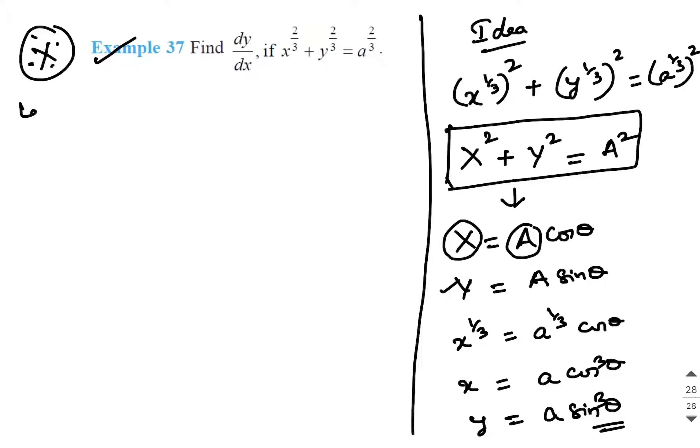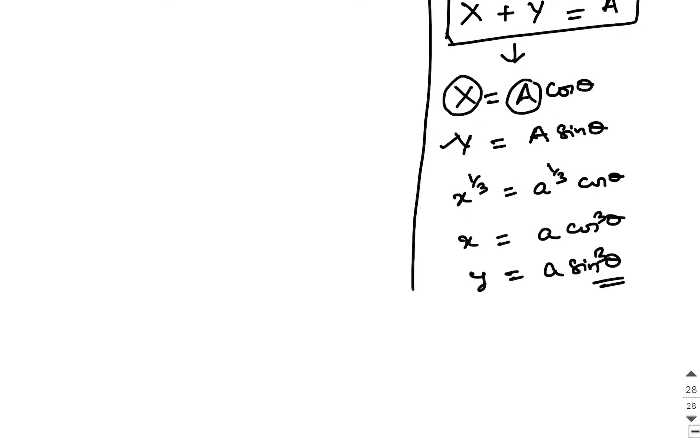Here, let x equals A cos cube theta and y equals A sin cube theta. In the textbook he would have directly taken this value, but I am trying to explain what is the logic behind it.